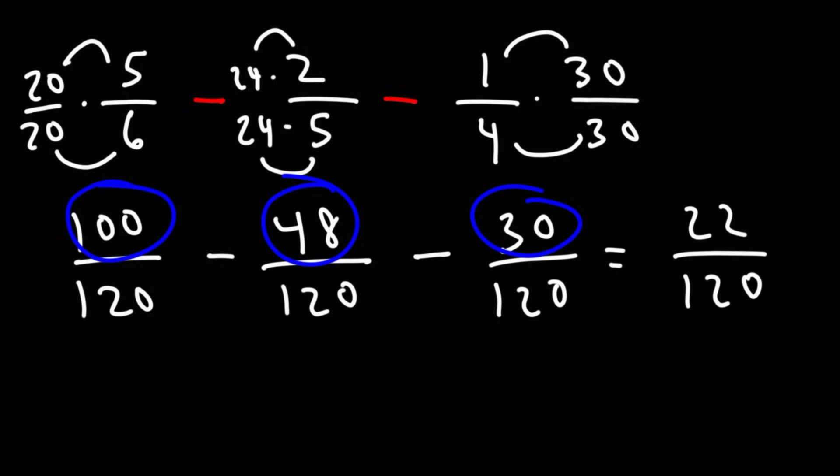Now, notice that both numbers in this fraction are even, which means we could simplify the fraction. 22, I'm going to write that as 11 times 2. 120 is basically 60 times 2. So we could cancel a 2 and reduce that fraction or simplify it to 11 over 60.